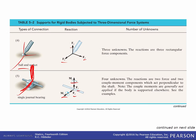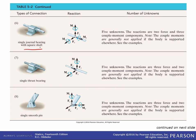The couple moments are generally not applied if the body is supported elsewhere. A journal bearing with a square shaft cannot rotate about that direction, so we have to add a moment about the Y axis. Again, the couple moments are generally not applied if the body is supported elsewhere.